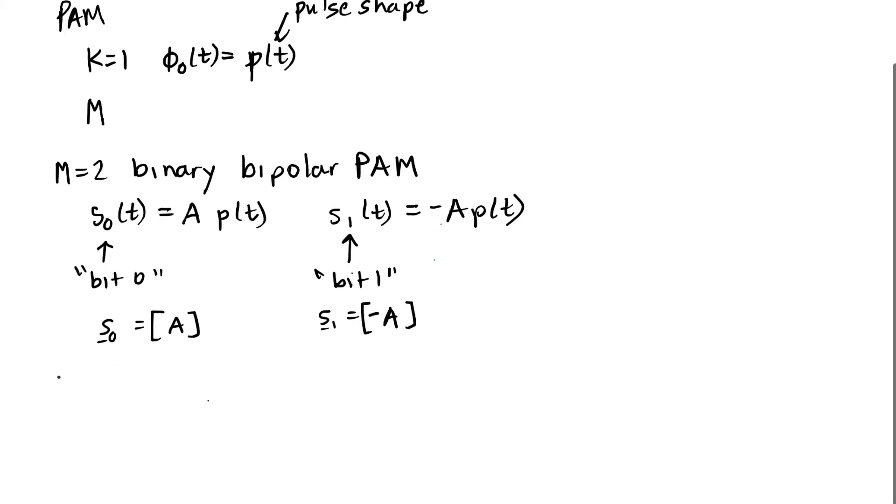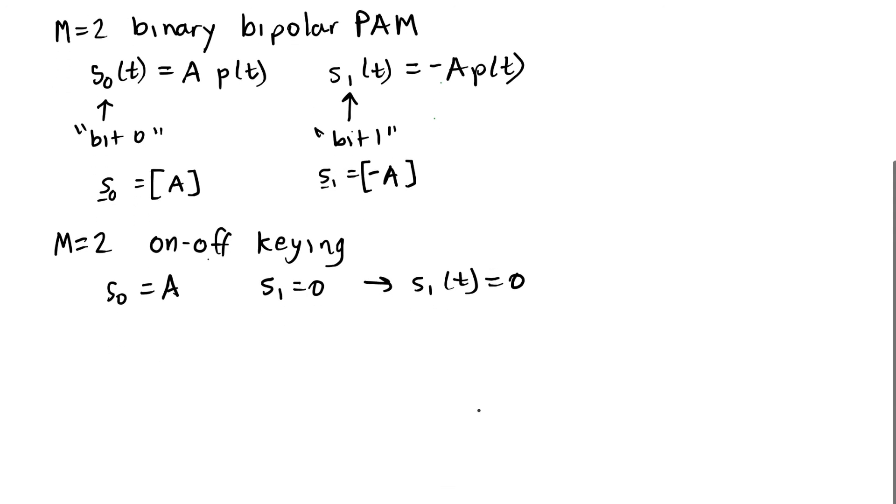Another option for M equals 2 is to have what's called on-off keying. And this is where S0 is equal to A, but S1 is equal to 0. That is that S1 of T is equal to 0 times the pulse shape, or just 0. When the transmitter is sending bit 1, in this case it wouldn't actually transmit anything. That can be an advantage, but we'll also study this in terms of spectrum efficiency later.